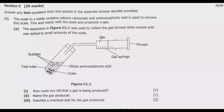Let us look at question C1, which is one of three questions where we are expected to answer two questions, each carrying 10 marks. The scale in a kettle contains calcium carbonate, and aminosulfonic acid is used to remove this scale. This acid reacts with the scale and produces a gas. The apparatus in figure C1.1 was used to collect the gas formed when excess acid was added to a small amount of the scale.